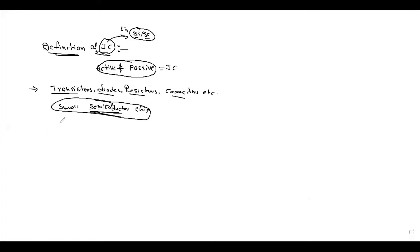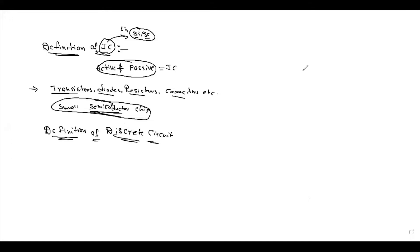Next, definition of discrete circuit. In general, information is of two types. Information which contains data — either in the form of images, videos, text, numbers, or symbols — that is nothing but information.